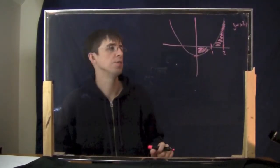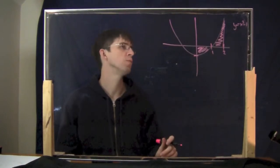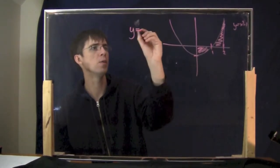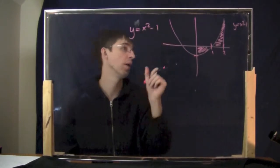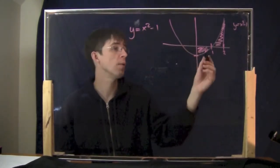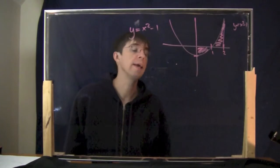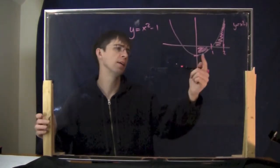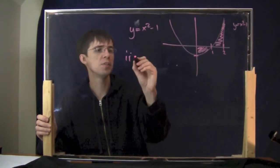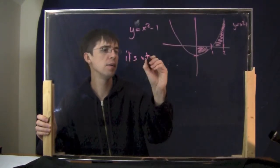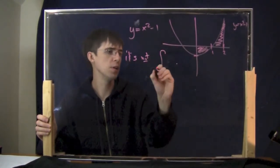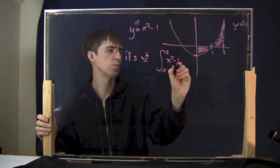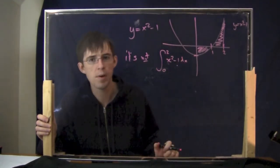Here is my example: this is the curve y = x² - 1. It looks like this, and I want to find the shaded area. Now this is slightly tricky. It is not equal to the integral from 0 to 2 of x² - 1 dx.